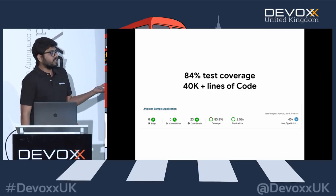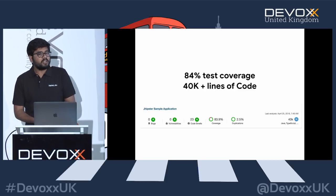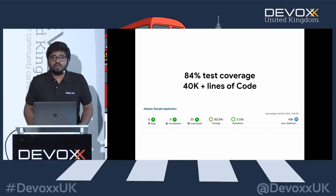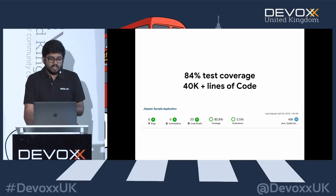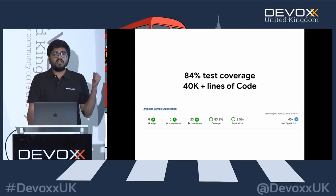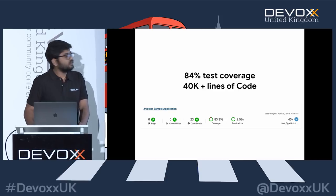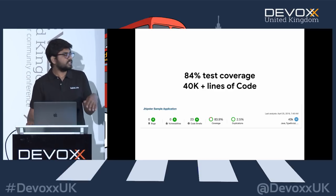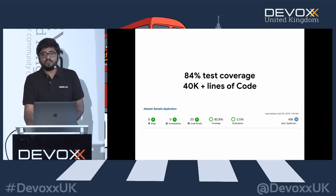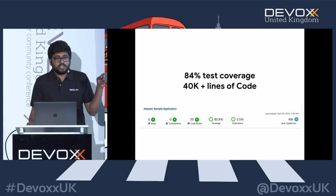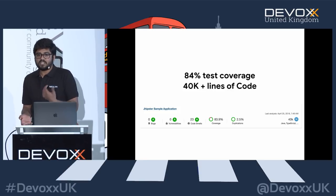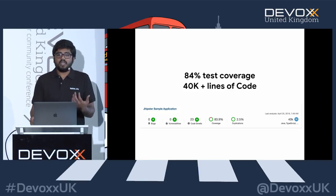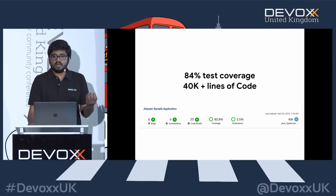JHipster has 13K+ weekly NPM downloads. JHipster has been rated as a top project by SonarQube for code quality. Our test coverage is around 84% as we move toward JHipster 5 — we generally used to be above 90%. We generate more than 40K lines of code in a sample application, and researchers estimated you can generate 26,000 varieties of applications with JHipster.